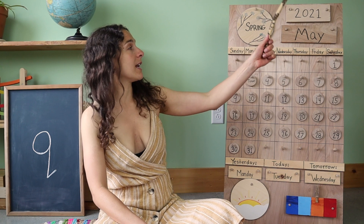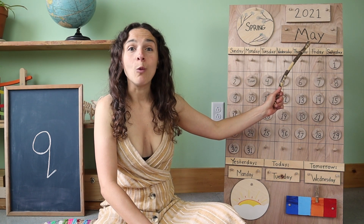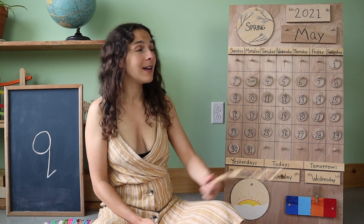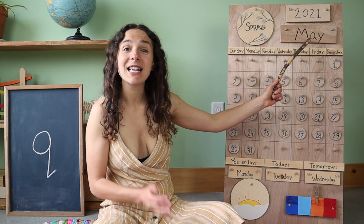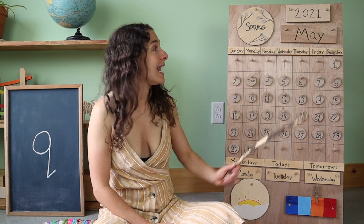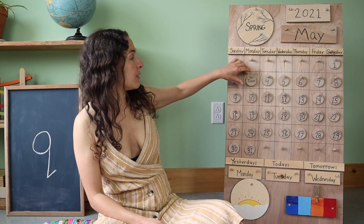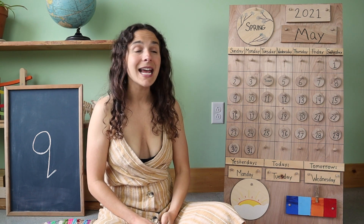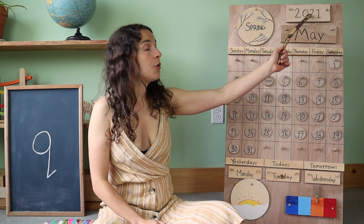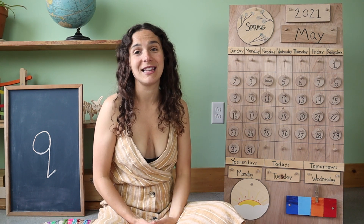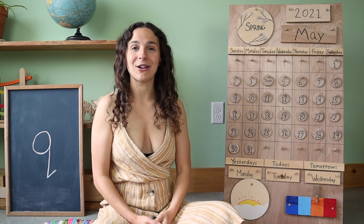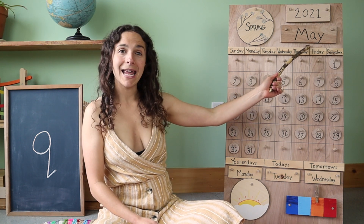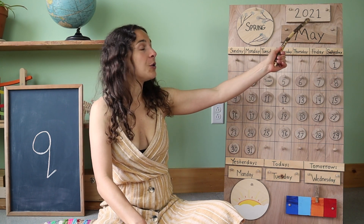I'm getting my pointing stick and I'm going to bring it up to the top of the chart. Right up here, we recently started a brand new month. Do you remember what the month is called? May. That's right, friends. The month is May. Today is May 4th. Yesterday was May 3rd. Today is May 4th, 2021. Will you say the date with me one more time? Today is May 4th, 2021.